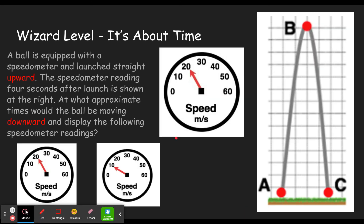Next type of question you'll see in the wizard level will read like this. I find these the ones that throw students off the most. So I want to spend the most time on this. I think you get four of these. A ball is equipped with a speedometer and launched straight upward. Pay attention to the direction. I think it's always going to be launched upward. The speedometer reading four seconds after launch is shown to the right.